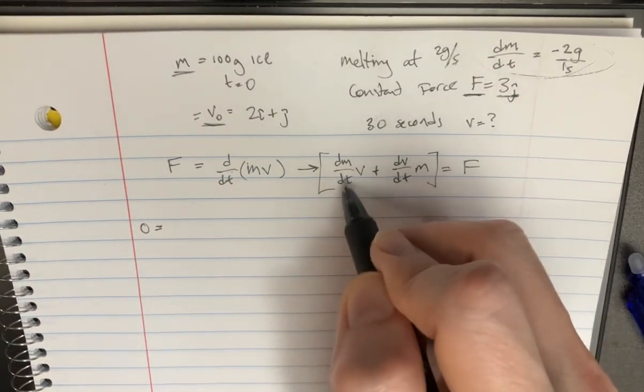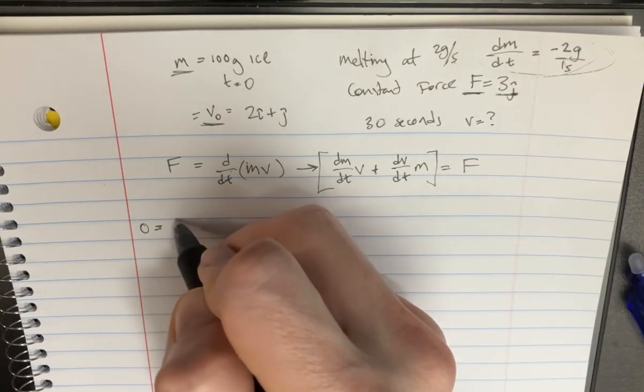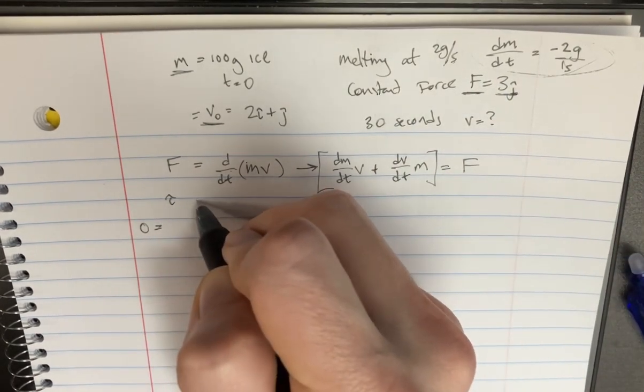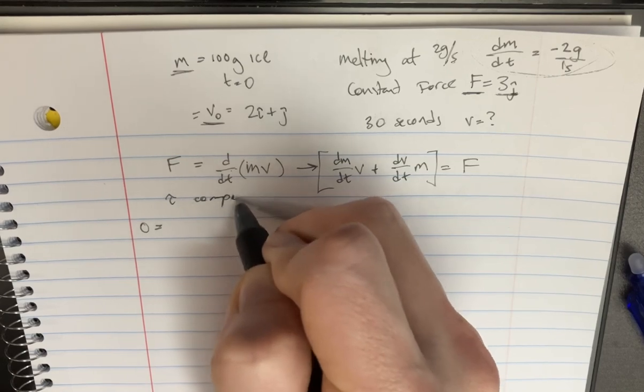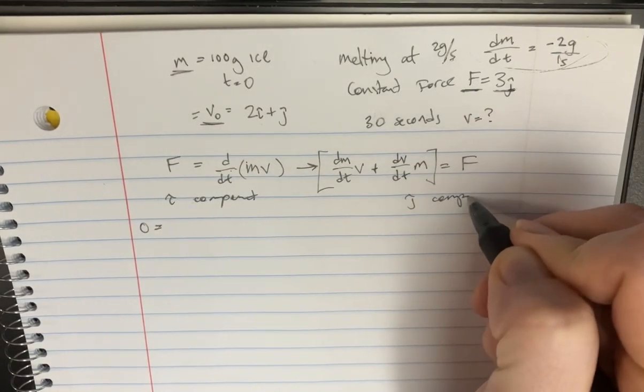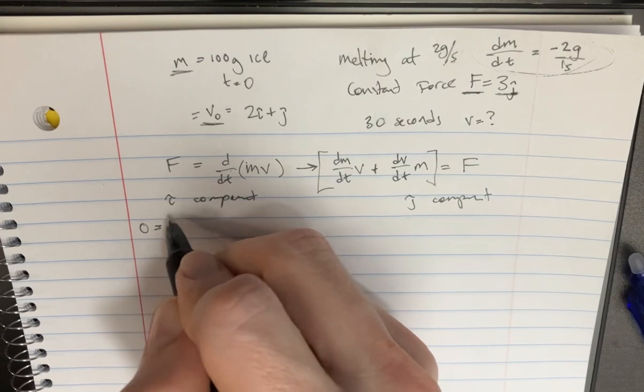But that's going to be equal to this. So dm over dt, and that's going to be, and this is for the i side, i components. And over here, we'll do the j components later.